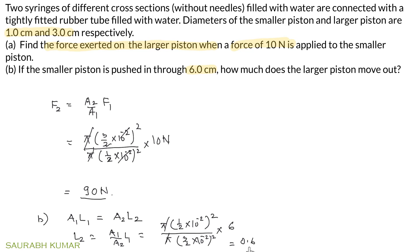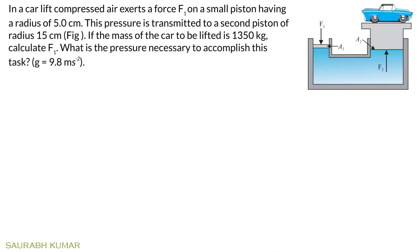Question: In a car lift, compressed air exerts a force F1 on a small piston having a radius of 5 cm. This pressure is transmitted to a second piston of radius 15 cm. If the mass of the car to be lifted is 1350 kg, calculate F1 and what is the pressure necessary to accomplish this task?